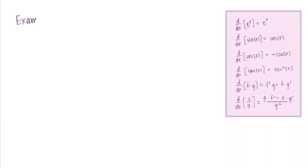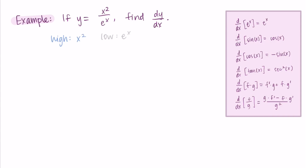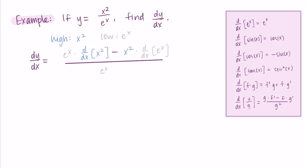Let's try an example. Say we have y equals x squared over e to the x, and we want to find dy/dx. Reading this out loud — x squared divided by e to the x — that "divided by" is a good indicator we use the quotient rule. So x squared is my high function and e to the x is my low function. I write out: low d-high minus high d-low, all over low squared, substituting in the high and low where necessary.